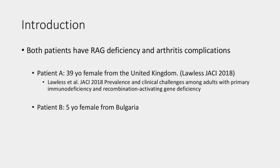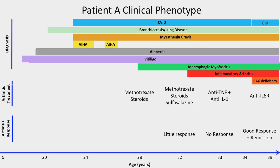Our presentation focuses on two patients with RAG deficiency and arthritis complications from adult and pediatric populations. Patient A is a 39-year-old female from the United Kingdom, part of a very recent study on adults with RAG deficiency — novel because RAG deficiency is usually considered a pediatric disease but is increasingly found in adults as well. Patient B is a five-year-old female from Bulgaria representing a pediatric case. Patient A's clinical phenotype starts with autoimmune symptoms in her adolescent years, including vitiligo at age 20 and alopecia later on, for which she still needs to wear a wig today.